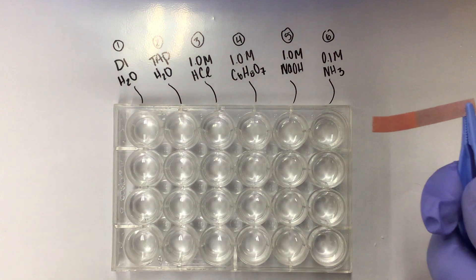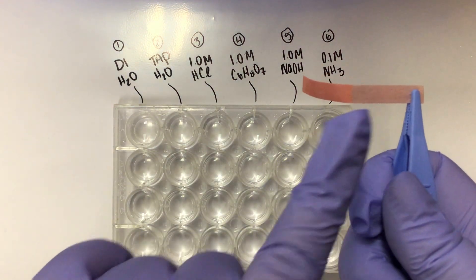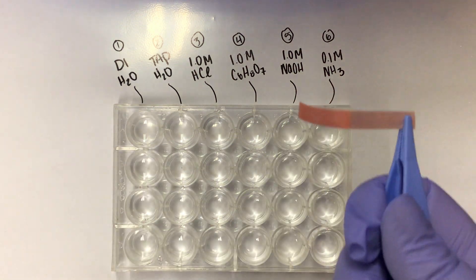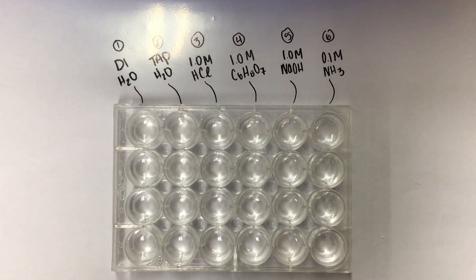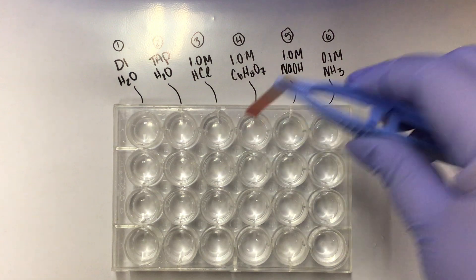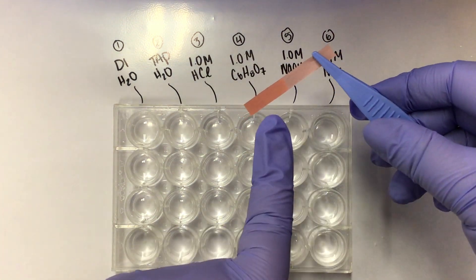It's a little bit difficult to tell on camera for some reason, but you can see two distinct colors there. This is the blue paper. This is now like a pinkish red color. Again, that distinction: blue paper, pinkish red color.